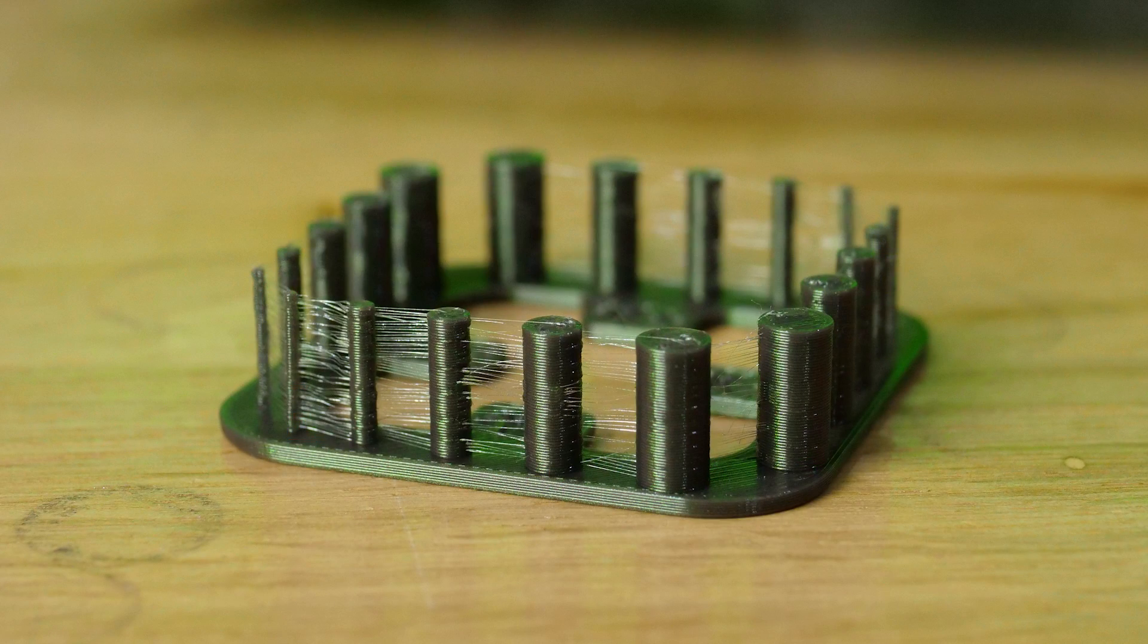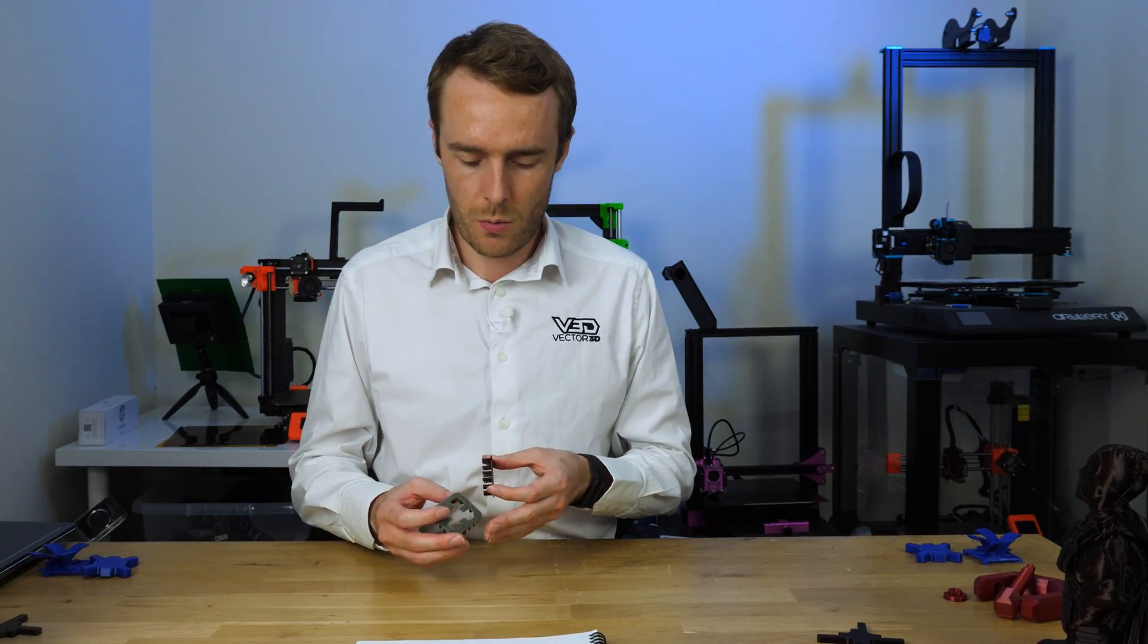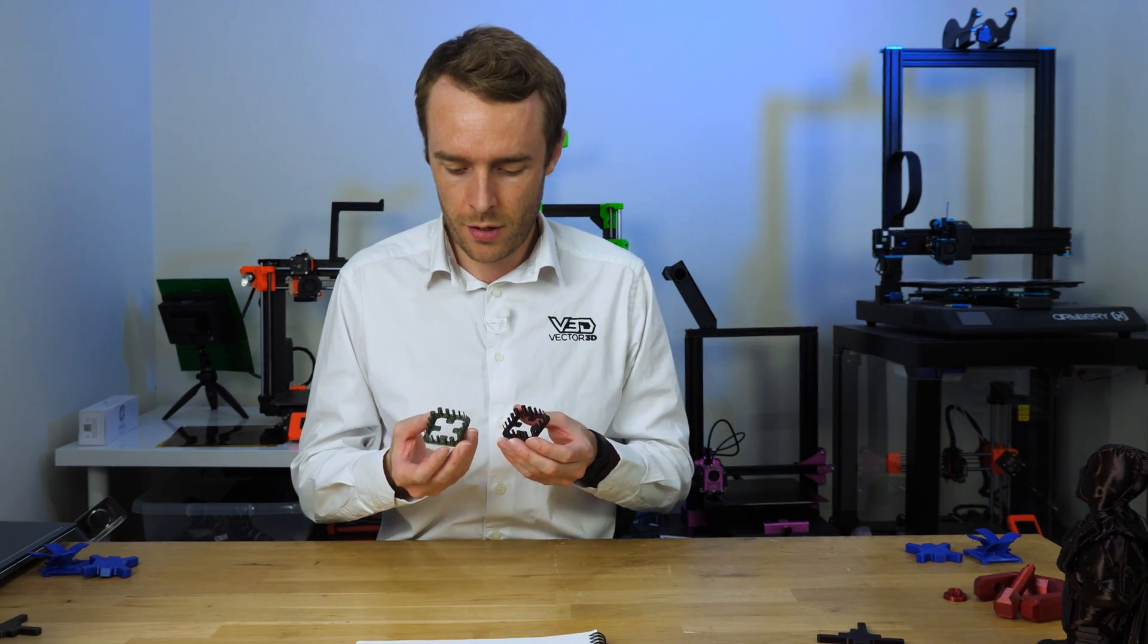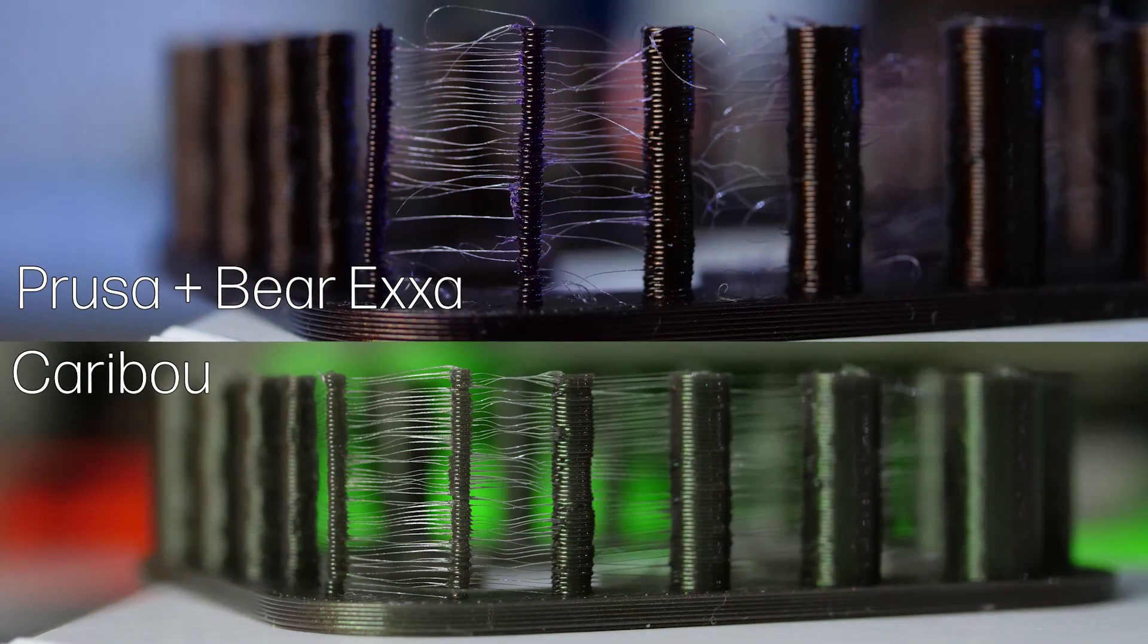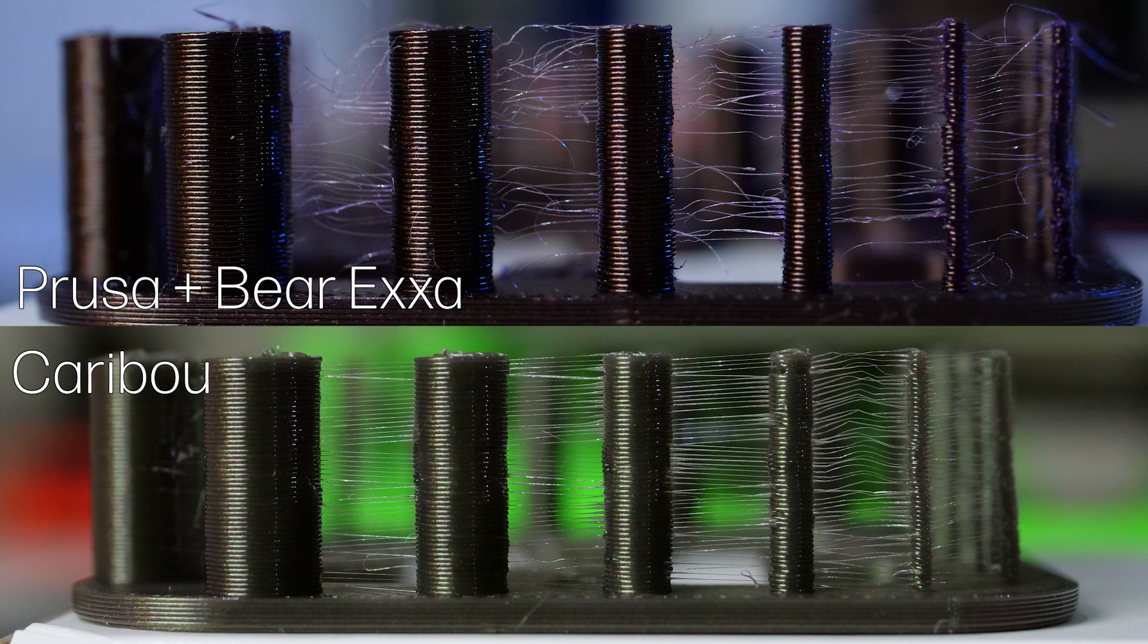The next test I want to take a look at is the stringing test. So this is a small square that I've designed with a number of very small pillars or posts on it. They're all round and it causes stringing between the two pieces. So just looking at these subjectively I don't think there's really much I can do in terms of an objective and measurable way to measure stringing but certainly from appearance the Prusa design this brown one does have quite a bit less stringing than this one the green one printed on the Caribou.